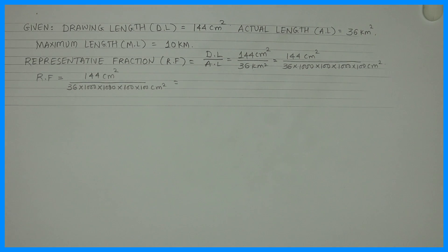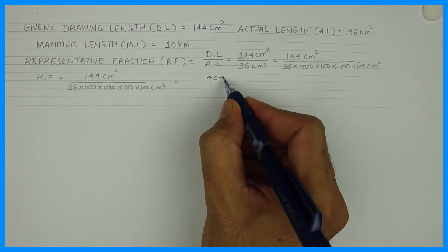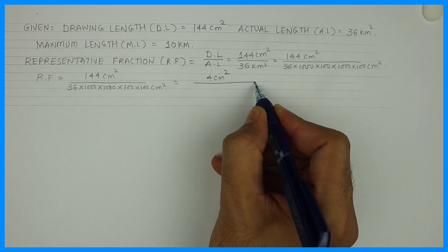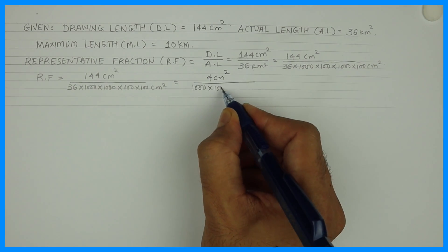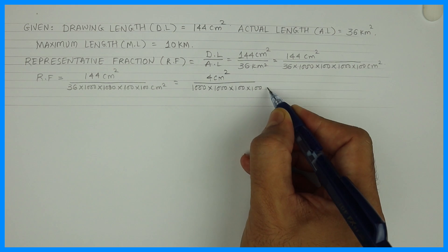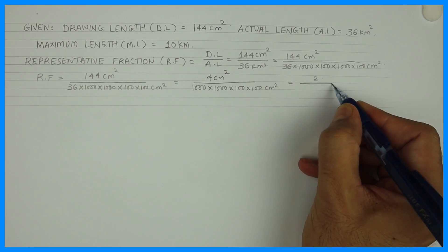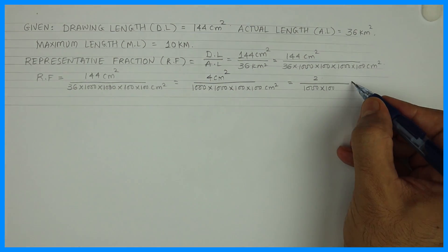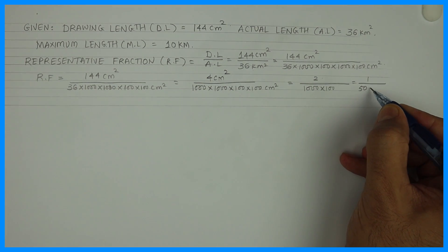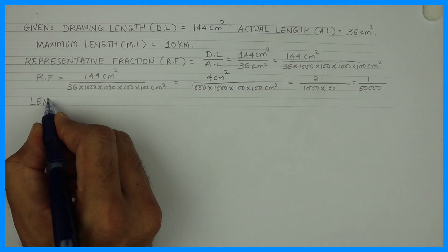Simplifying: 144 upon 36 gives 4. We then need to remove centimeter square, so we take the square root. We get 2 upon thousand into hundred, which is 1 upon 50,000. This is very important in this sum — finding out RF.